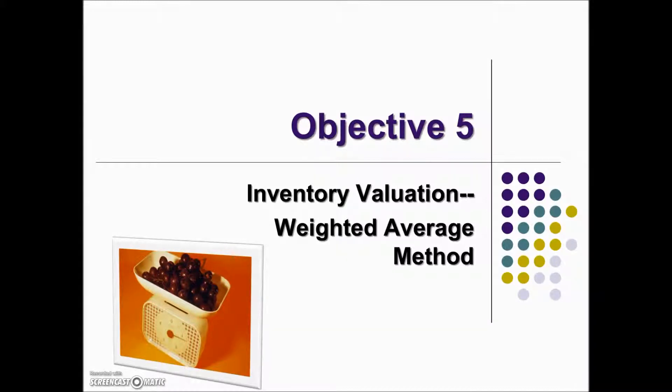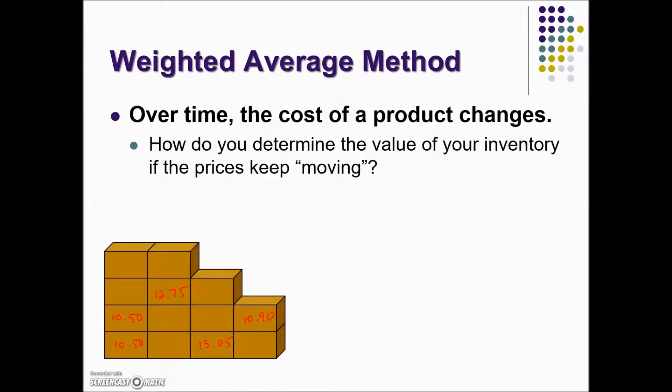There are four major methods used for inventory valuation: the specific identification method, the weighted average method, the first in first out method, and the last in first out method. Let's take a look first at finding inventory using the weighted average method.